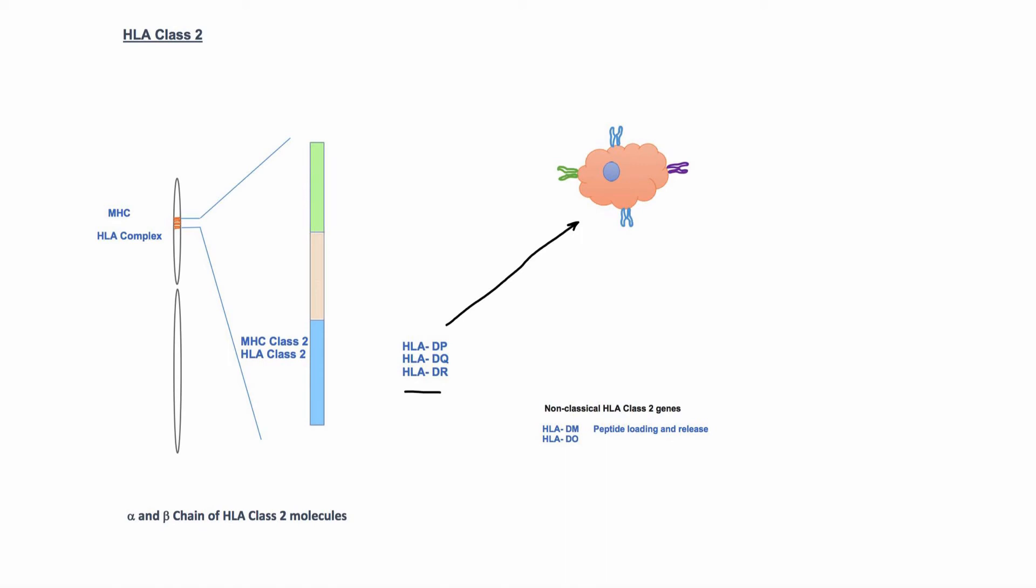However, DR beta gene can have up to four different genes that can result in 10 to 12 different types of HLA class 2 molecules, depending on number of DR beta genes.